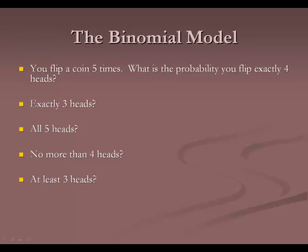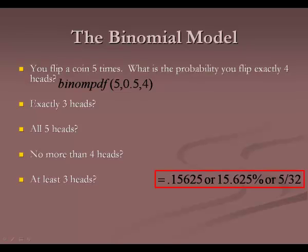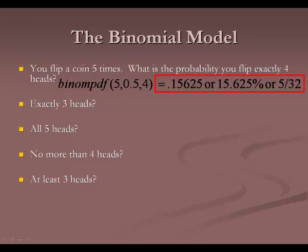Try this: flipping a coin five times, what's the probability of getting exactly four heads? BinomPDF(5, 0.5, 4) — 5 for the total, 0.5 for the probability, 4 for how many we want. This gives 0.15625, or 15.625%, which is the same as 5/32 as a fraction.